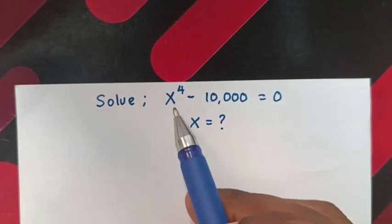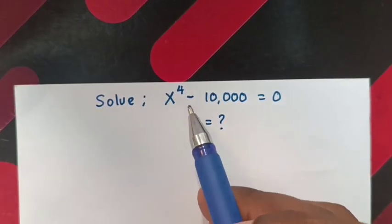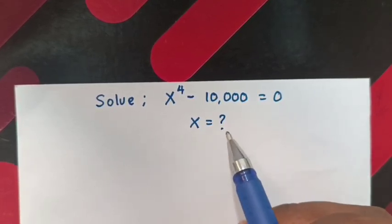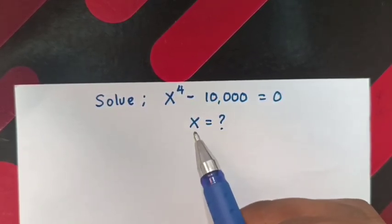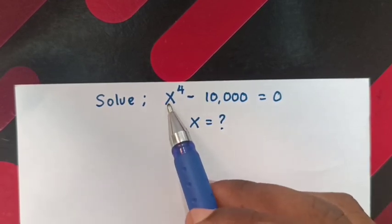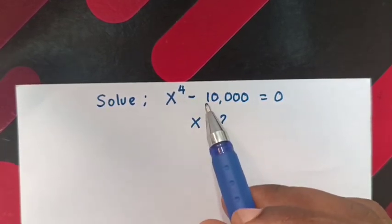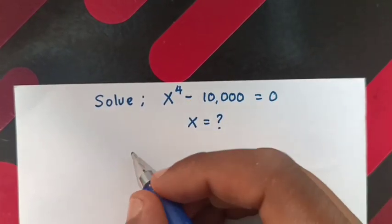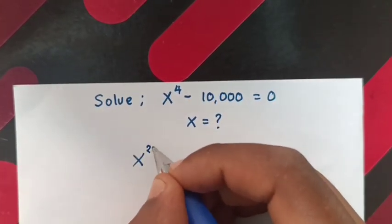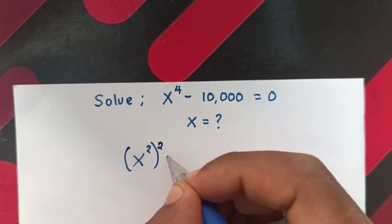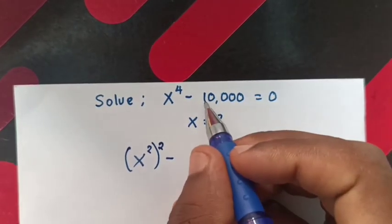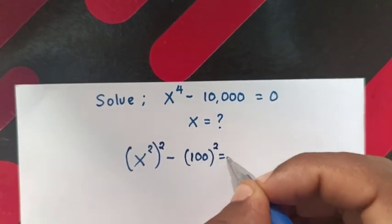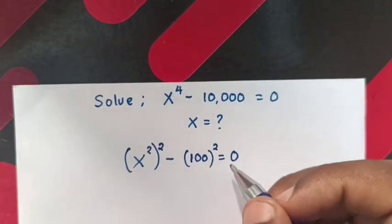How to solve this equation: x to the power 4 minus 10,000 equals 0, to find all the values of x, or all the roots of x. First, you can see x to the power 4 — this is a quadratic equation. Now, x to the power 4 is the same as (x²)², and 10,000 is the same as 100 squared, so the equation becomes (x²)² minus 100² equals 0.